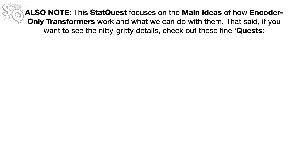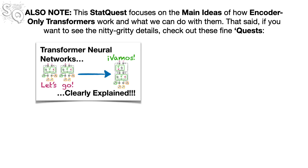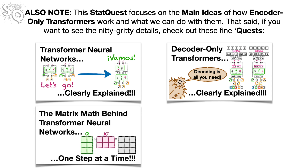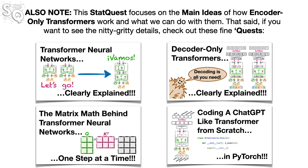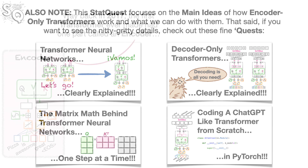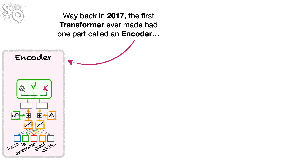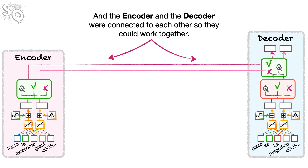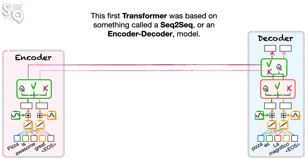This StatQuest focuses on the main ideas of how encoder-only transformers work and what we can do with them. If you want to see the nitty-gritty details, check out these fine quests. Way back in 2017, the first transformer ever made had one part called an encoder and a second part called a decoder, and it was based on something called a seq-to-seq or encoder-decoder model.